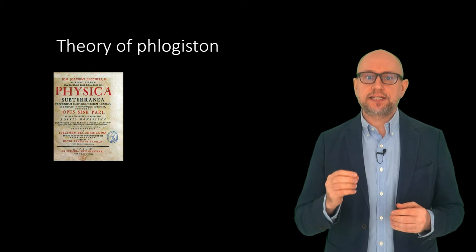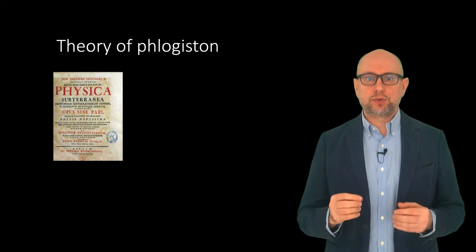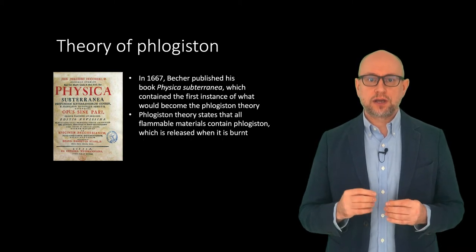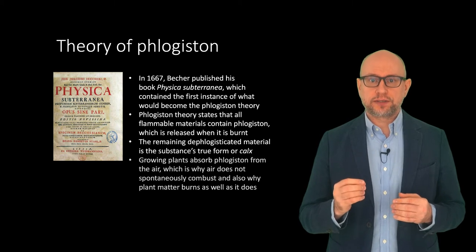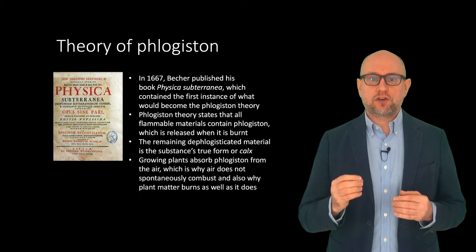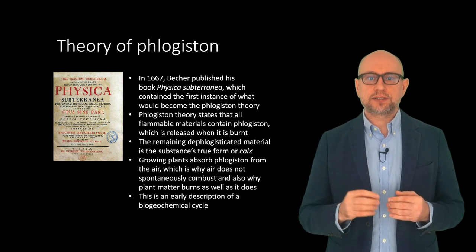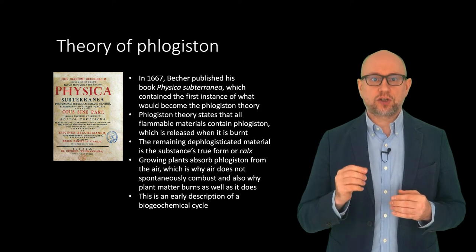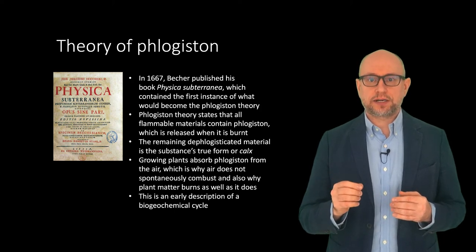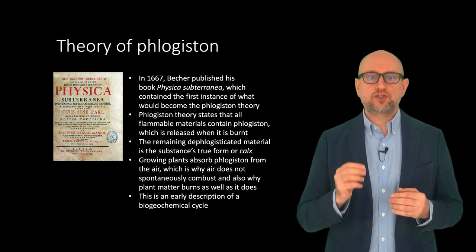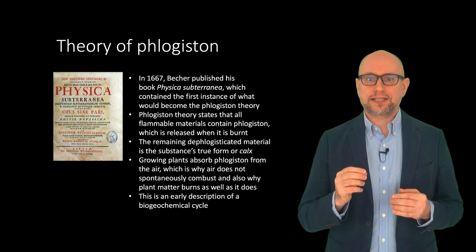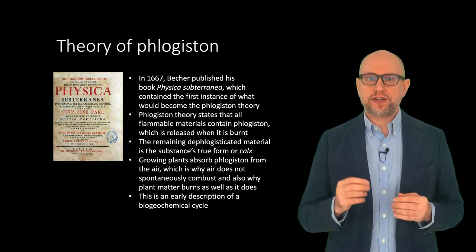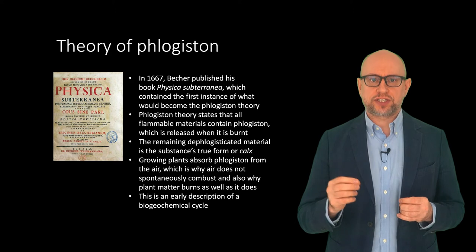Phlogiston theory stated that all combustible materials were made of two parts. One part, called phlogiston, was given off when a substance containing it was burnt. The remaining part, the dephlogisticated part, was thought to be the substance's true form, or calcs. If something gave off a lot of heat, it was thought to be rich in phlogiston.